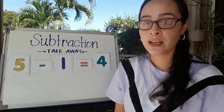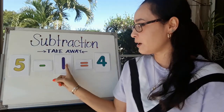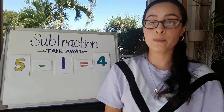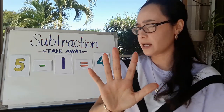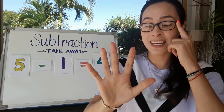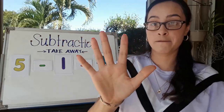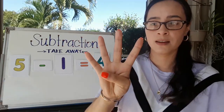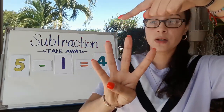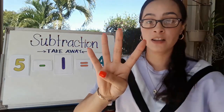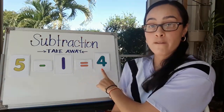Let's do the first strategy — we're going to use our fingers. So five take away one. This first number is going to tell me how many fingers I need to put up. Five. Now take away one — that sounds like I need to take away one of my fingers, so I'm going to go ahead and put down one finger. How many fingers are left? Let's count together: one, two, three, four. So this number sentence is correct: five take away one equals four.